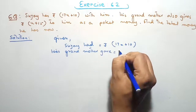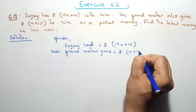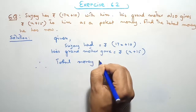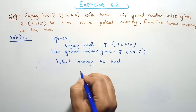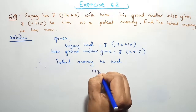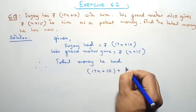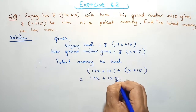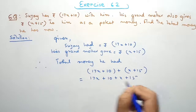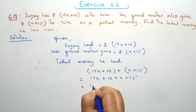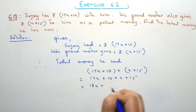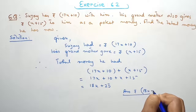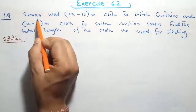His grandmother gave rupees x plus 15. Therefore, total money he has equals 17x plus 10 plus x plus 15. Here 17x plus 1x equals 18x, and plus 10 plus 15 equals 25. Answer is rupees 18x plus 25.